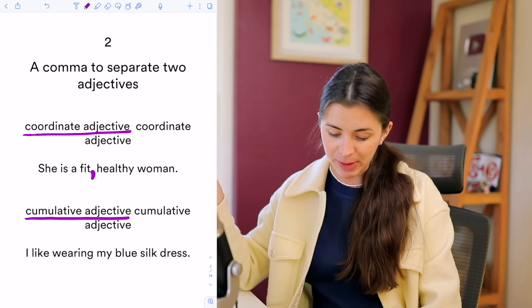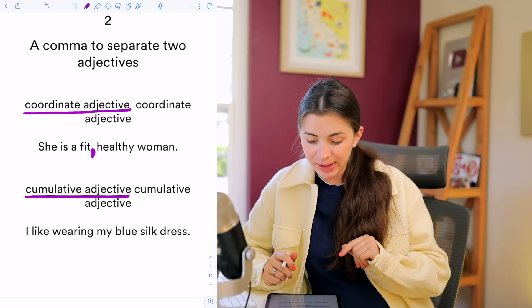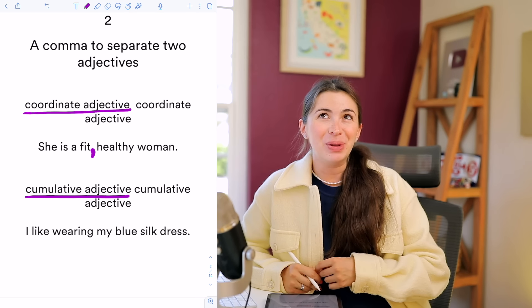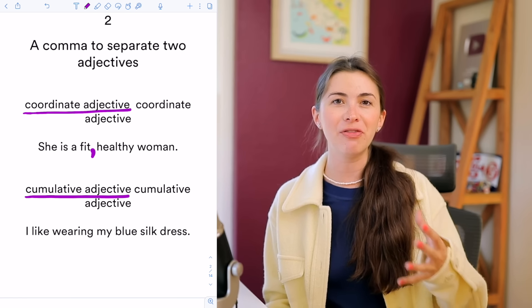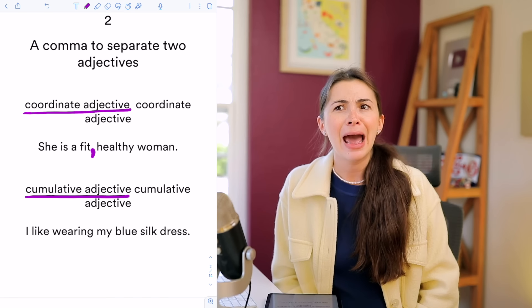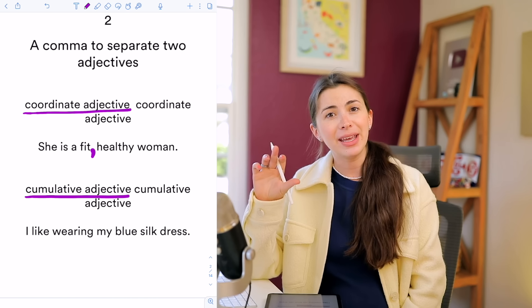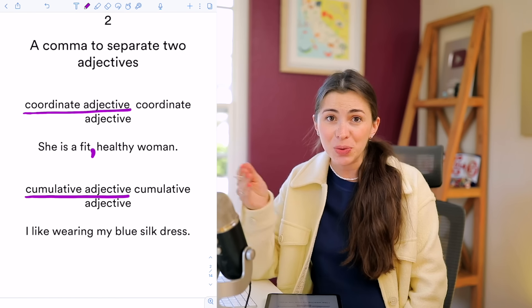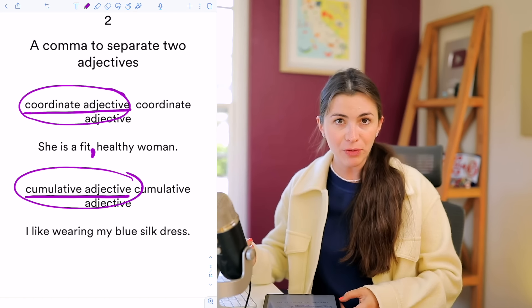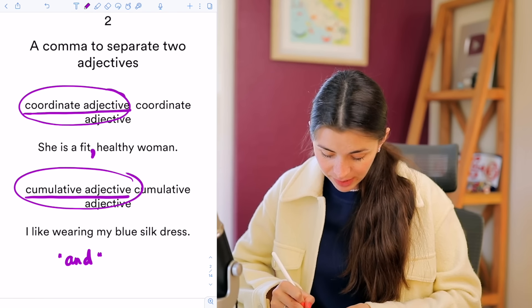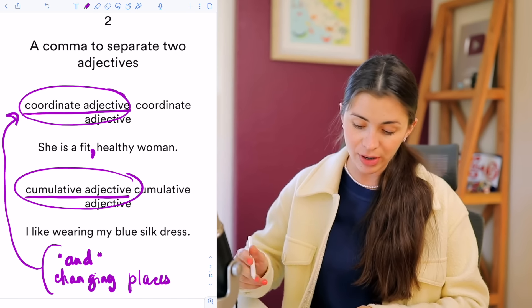Cumulative adjectives describe different things. Example: 'I like wearing my blue silk dress.' If you say 'my blue and silk dress,' these sound like two different categories. And 'my silk blue dress' doesn't work naturally — normally color comes first. You can't really change the order or place 'and' in between, so there is no comma needed. To summarize: if both rules — swapping order and inserting 'and' — work, you have coordinate adjectives and use a comma.